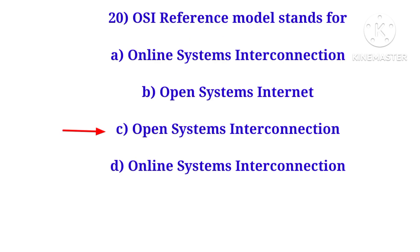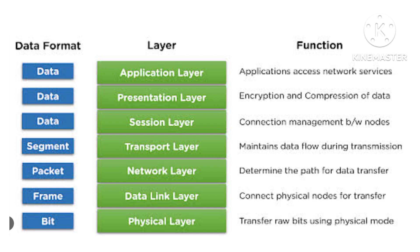Next question: OSI reference model stands for — the correct answer is option C: Open System Interconnection. The OSI model has seven layers: physical layer, data link layer, network layer, transport layer, session layer, presentation layer, and application layer.